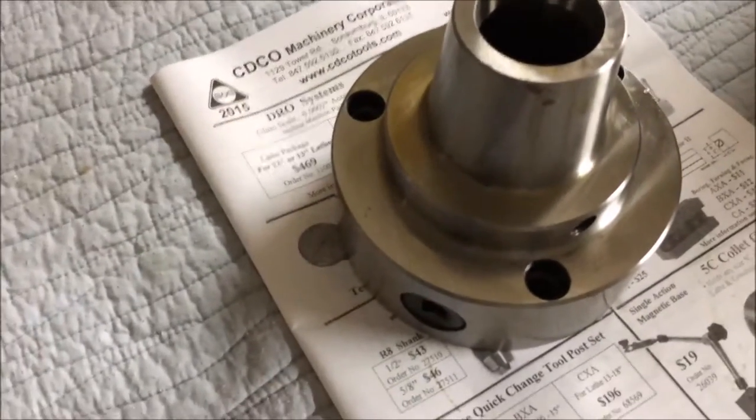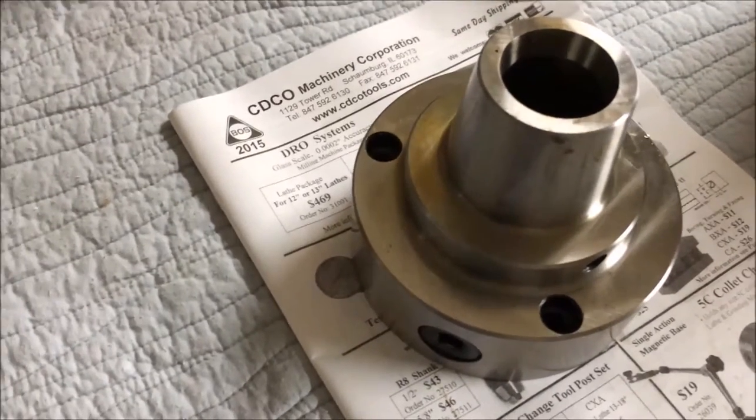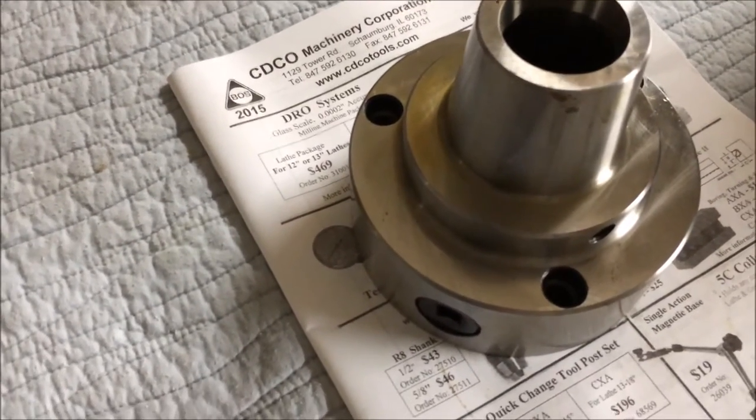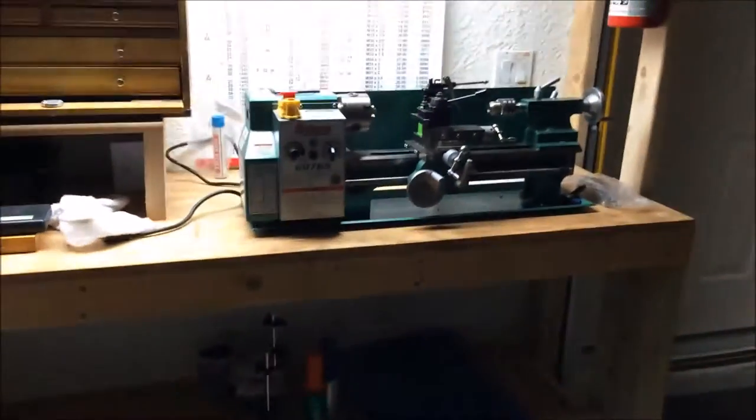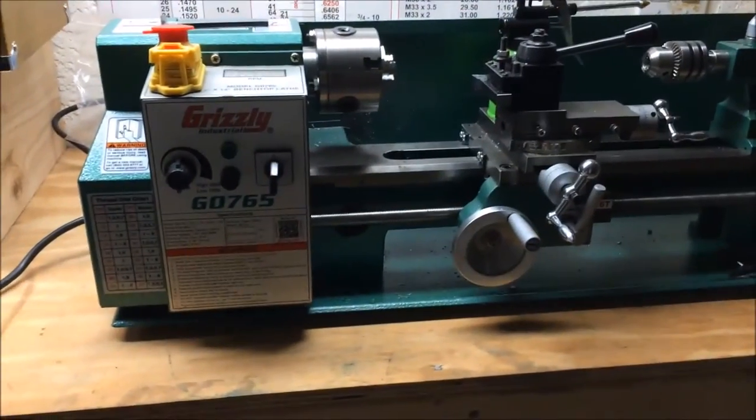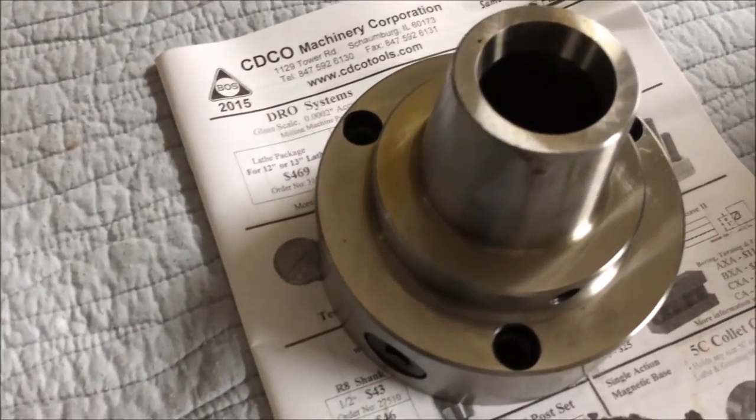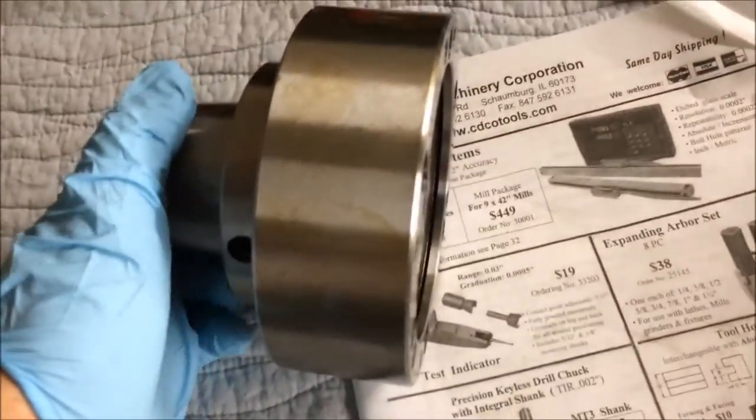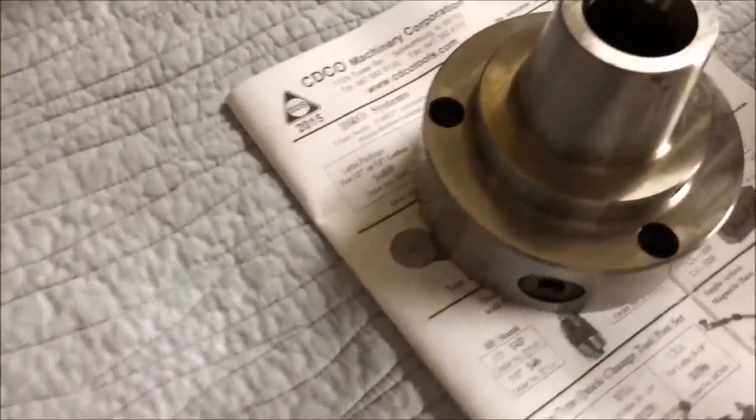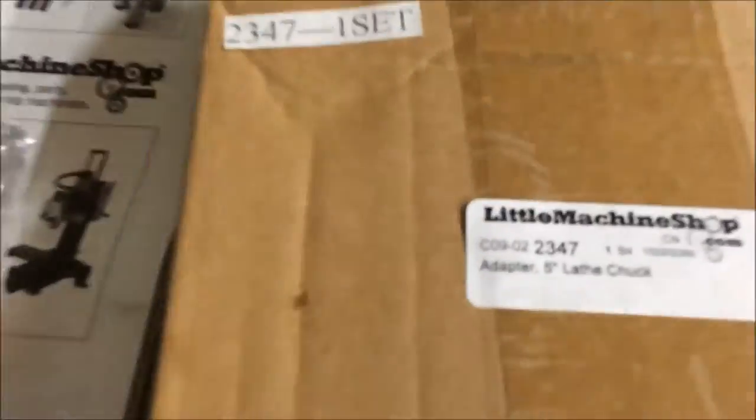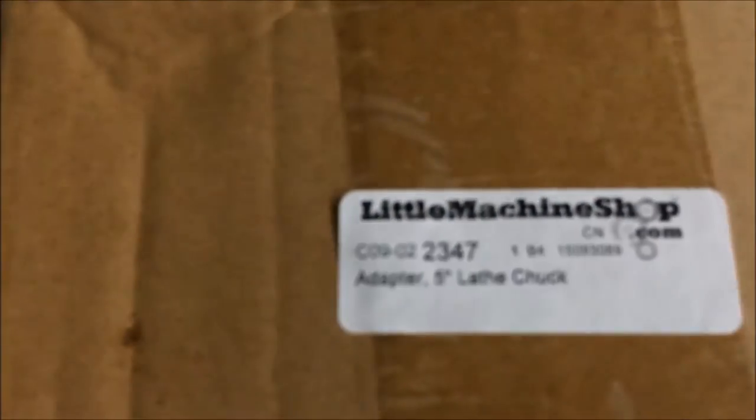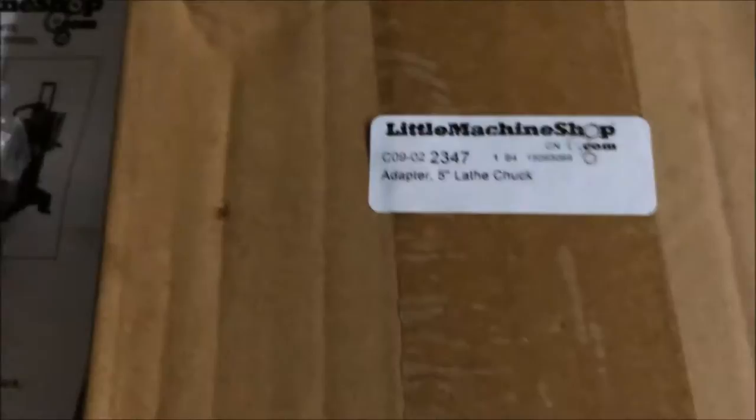So something I've been meaning to get around to for quite a long time is to install a 5c collet chuck on this lathe right here. It's a Grizzly G0765. So I picked up this collet chuck off eBay. It was $169. It's a 5c collet chuck. Doesn't look too bad. I also picked up an adapter plate from LittleMachineShop.com. It's the 2347 adapter which I'm hoping will work out pretty well for this project.